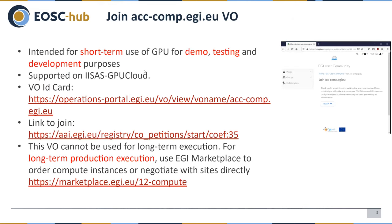We have one VO for testing, demo, and development purposes — it's supported on our cloud site. The VO information and join link are available online. This VO is not intended for long-term execution, just for testing, demo, and development. If you want to use GPU for production, you should order GPU instances via the EGI Marketplace or negotiate directly with a site.